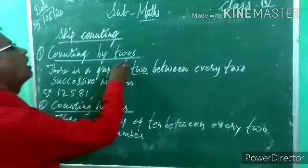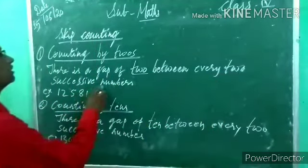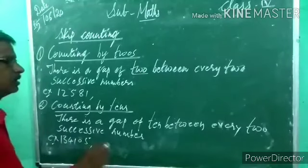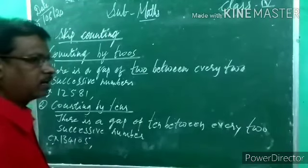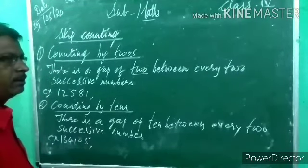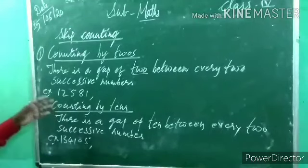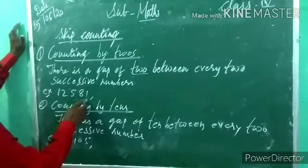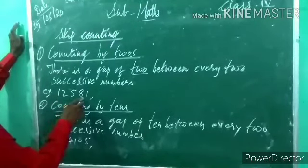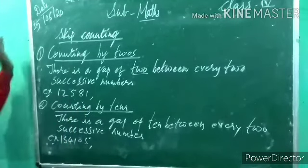There is a gap of 2 between every two successive numbers — not 1 and 2, but maybe 1 and 3, or 1 and 4. For example, this 5-digit number: 1, 2, 3, 4, 5 — how to read it: 1, 10, 100, 1000, 10,000.